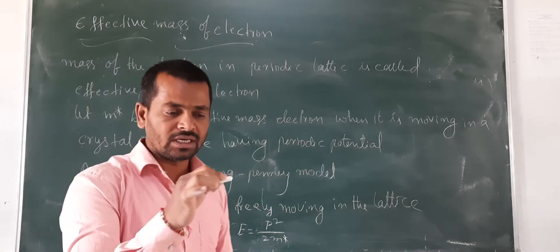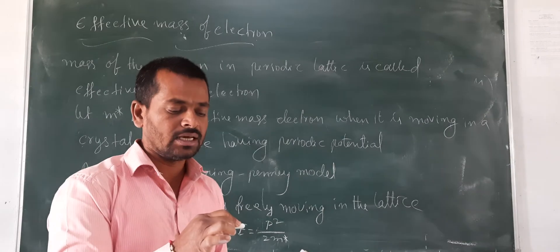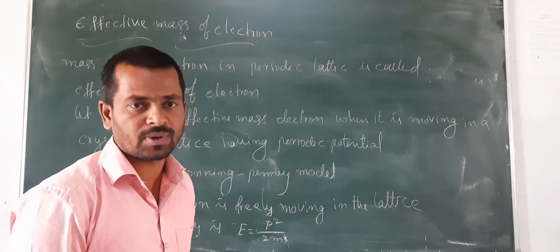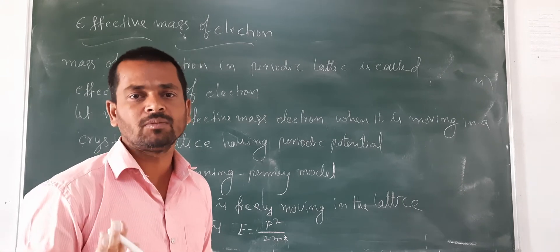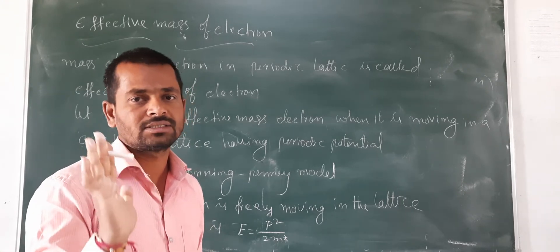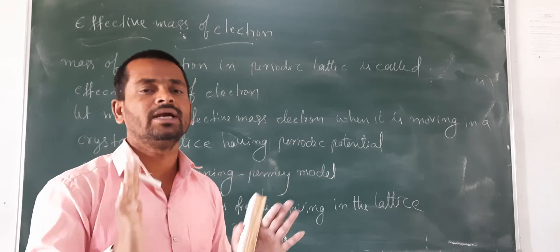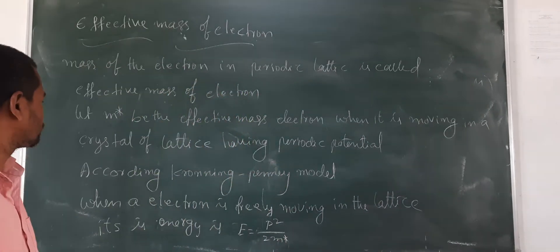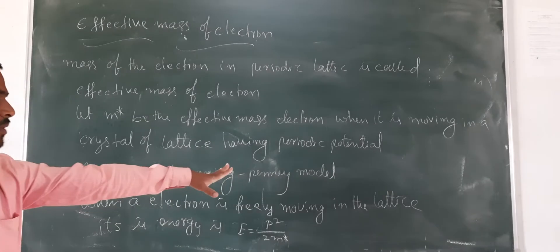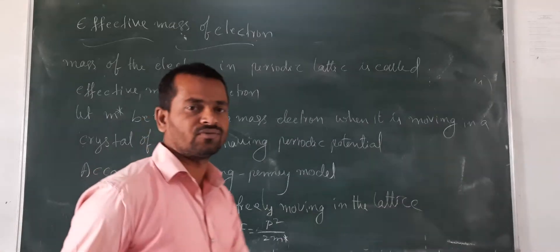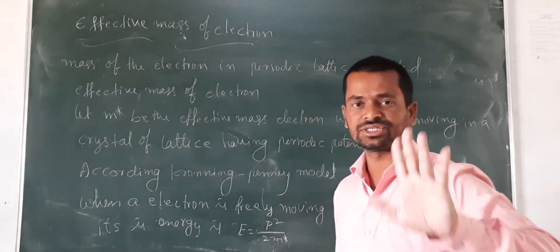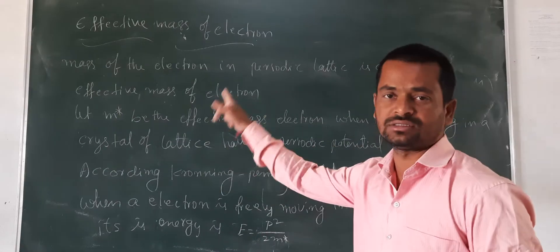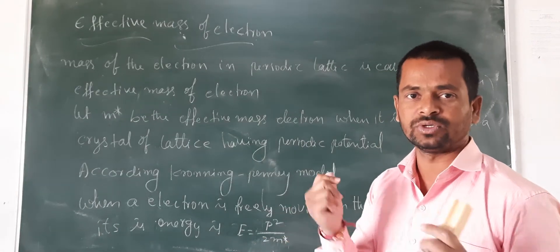So when electron is moving in a crystal of lattice, it may have the periodic potential. So that periodic potential is explained in the Kronig-Penney model. Please watch that video then you can understand what is the periodic potential I explained there clearly. According to Kronig-Penney model, this is taken from the Kronig-Penney model only.